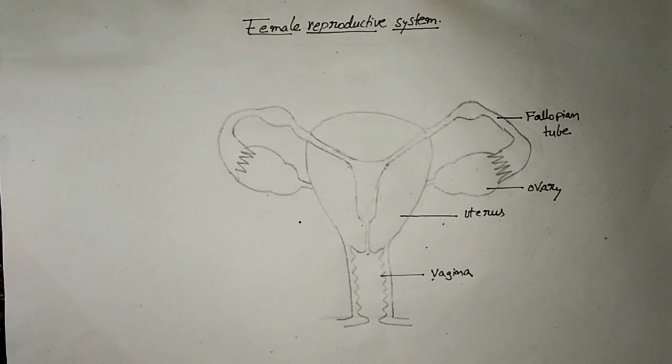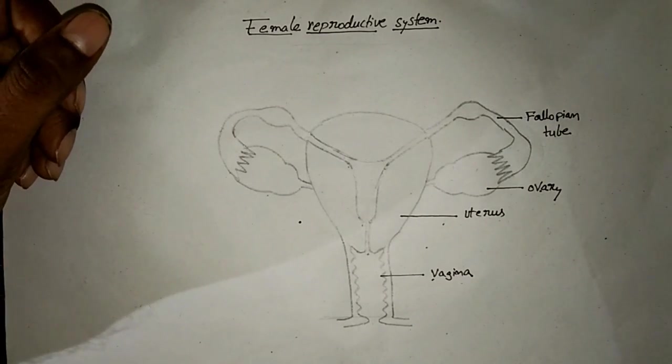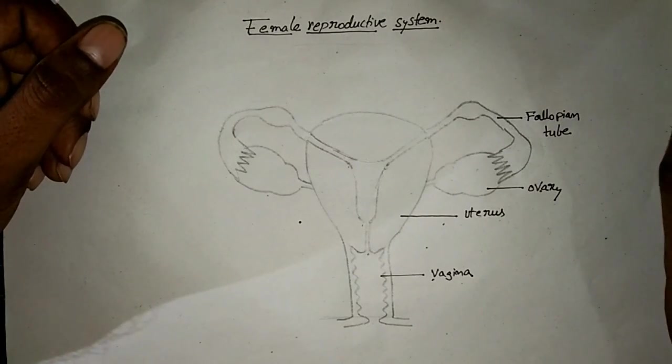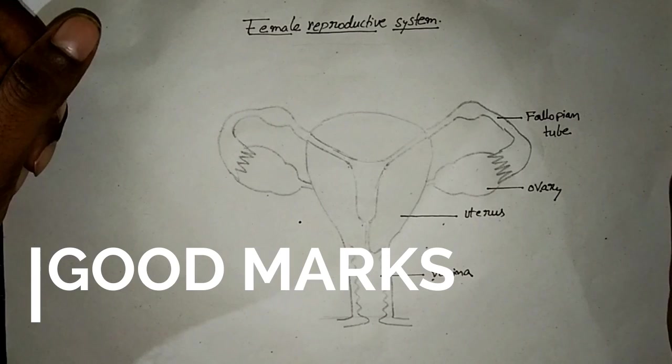So friends, this is the labeled diagram of the female reproductive system. And you can too try it, and you can score very good marks.